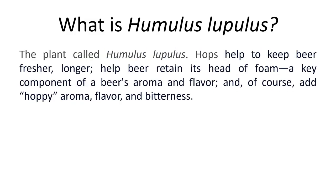Humulus lupulus is the scientific name for the hops flower. The flower of Humulus lupulus helps to keep beer fresher for longer, helps beer retain its head of foam, and is a key component of beer's aroma, flavor, and bitterness — giving it that characteristic hoppy aroma and bitterness.